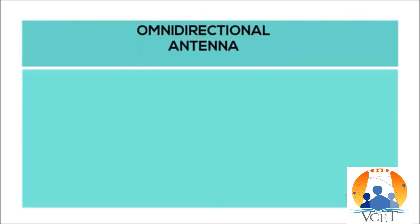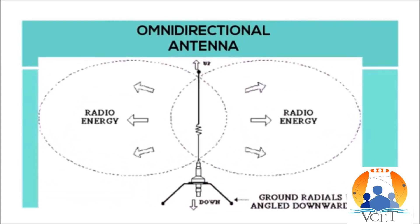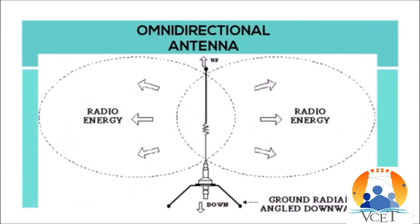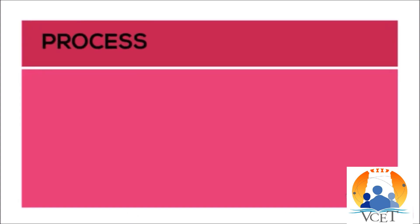An omnidirectional antenna is a wireless transmitting or receiving antenna that radiates or intercepts radio frequency electromagnetic fields equally well in all horizontal directions in a flat 2D geometric plane.